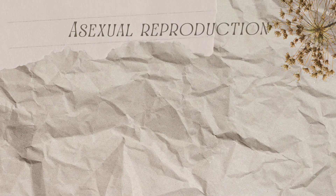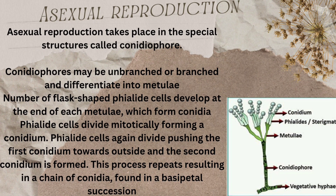Let's talk about asexual reproduction. Asexual reproduction involves a special structure called the conidiophore. The conidiophore is branched and differentiated into metulae. Metulae bear sterigmata, which are flask-shaped cells. The sterigmata cells divide mitotically to produce conidia.